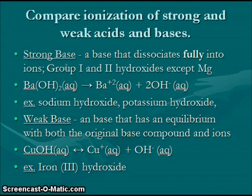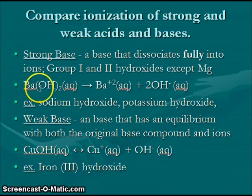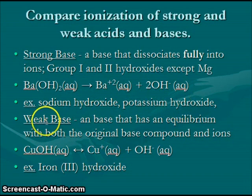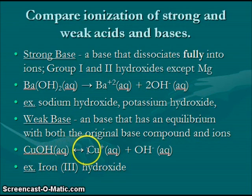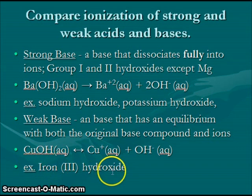Just as strong acids totally dissociate in water, so do strong bases. Strong bases include the group 1 and group 2 hydroxides, except for magnesium hydroxide which is a weak base. For example, barium hydroxide Ba(OH)2 dissociates at 100% in water to produce barium ions and hydroxide ions. Other strong bases include sodium hydroxide and potassium hydroxide. Weak bases reach an equilibrium — for example, copper(I) hydroxide partially dissociates, and iron(III) hydroxide is another example of a weak base.